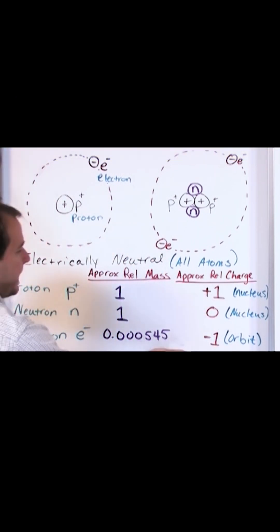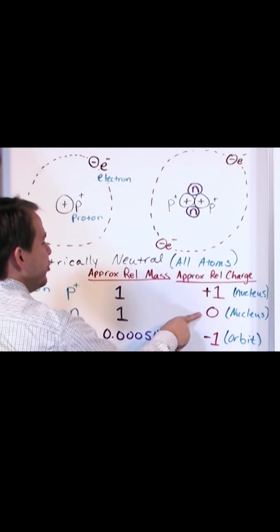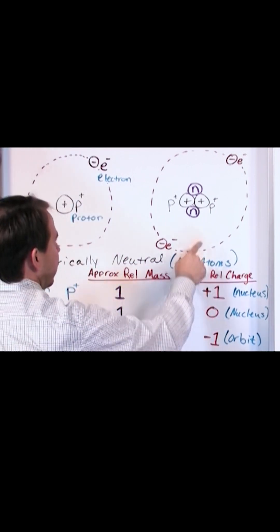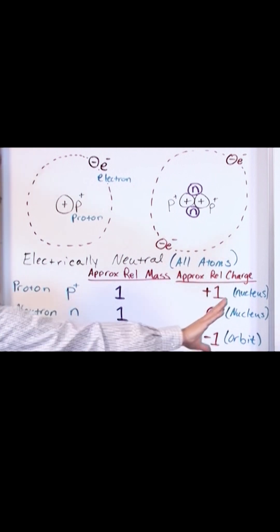We have these electrons. They have a charge of negative 1. Now the neutrons, which are also there, have no electrical charge, so they don't contribute anything to the charge discussion.